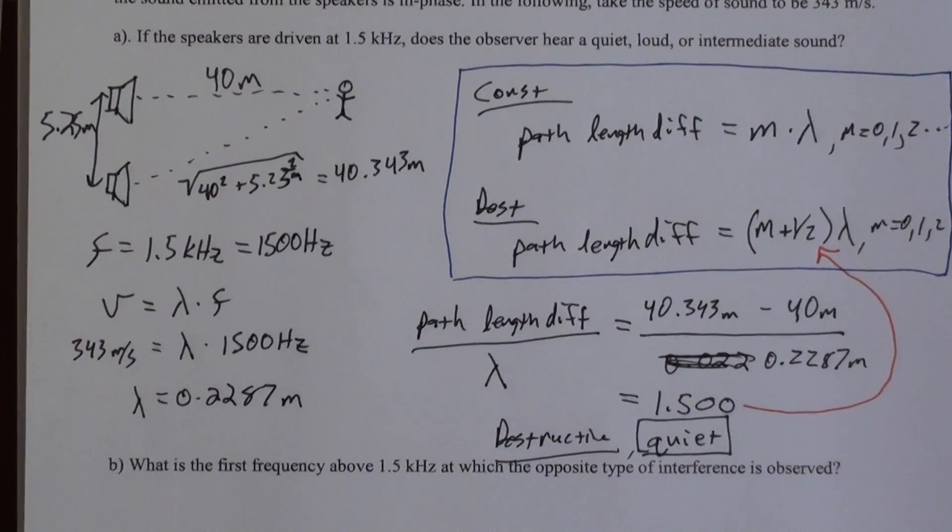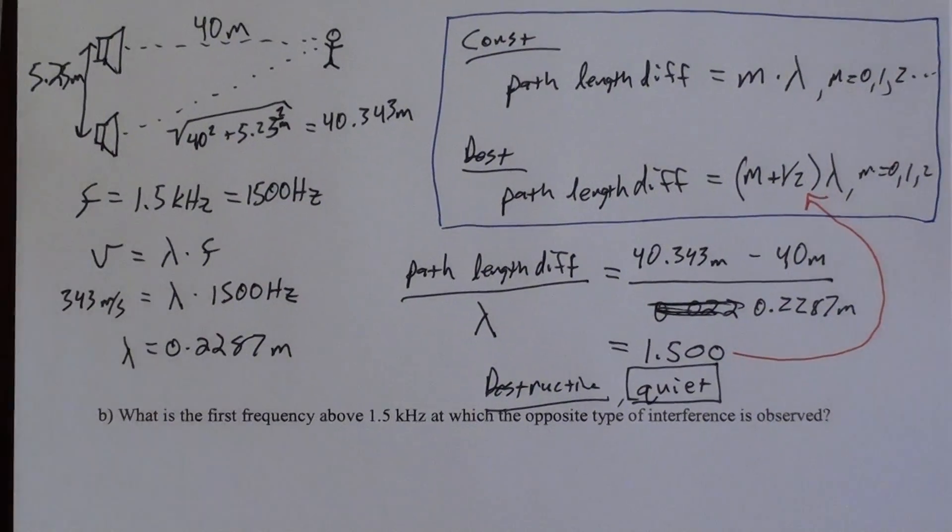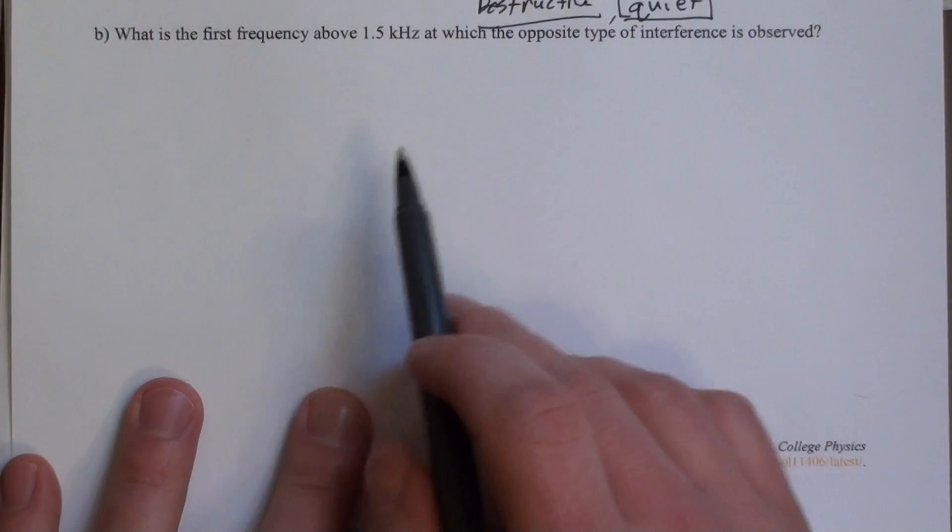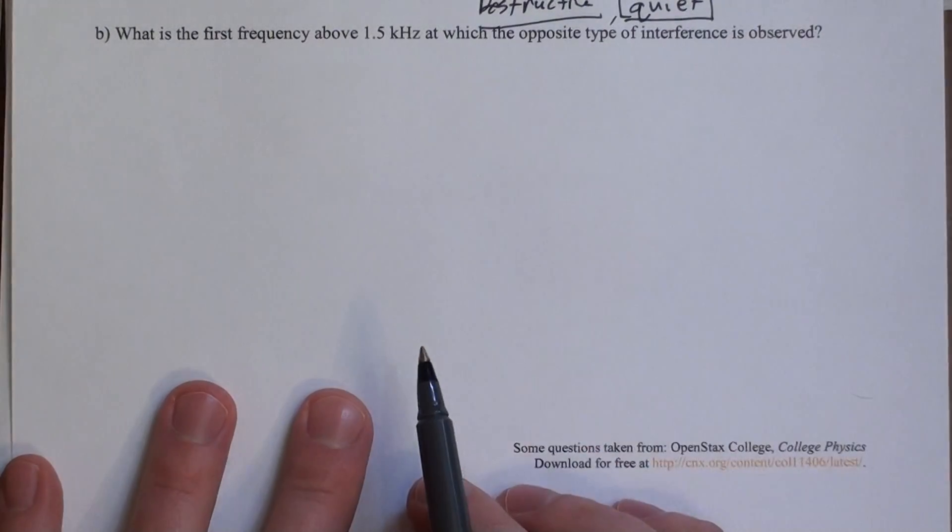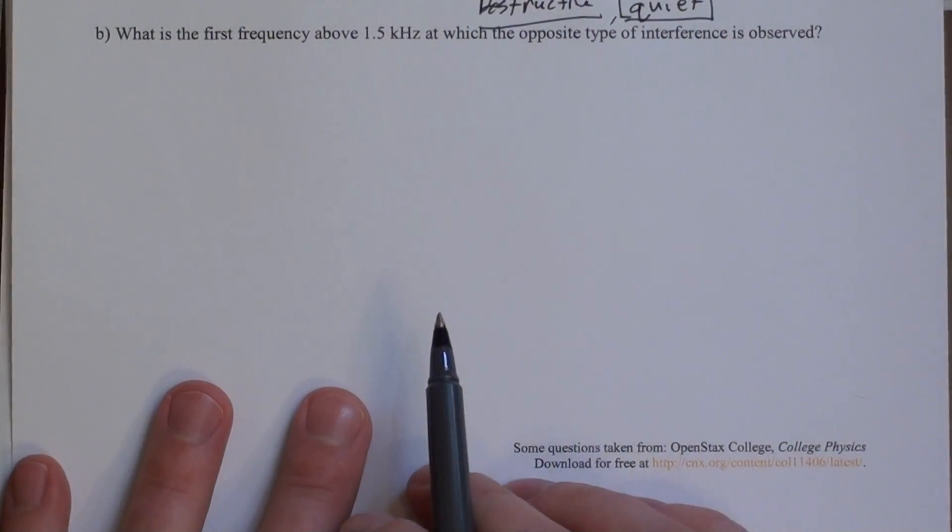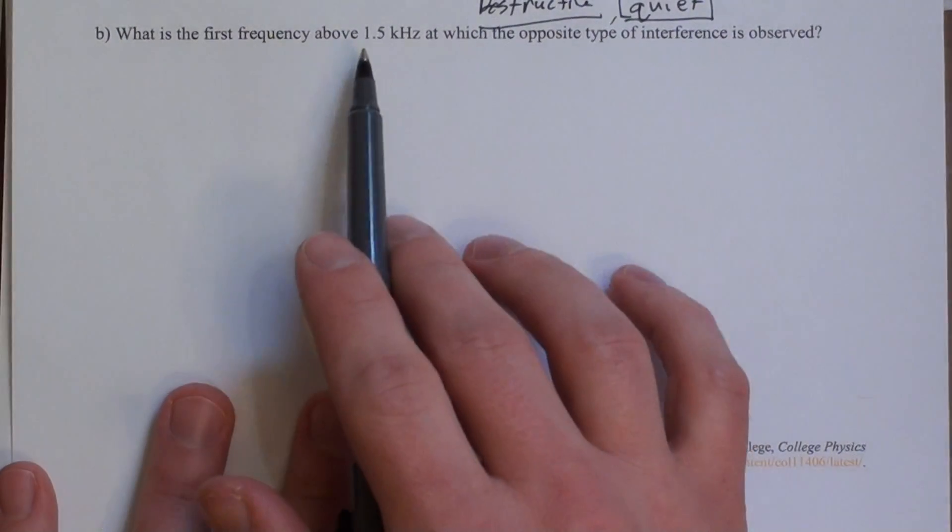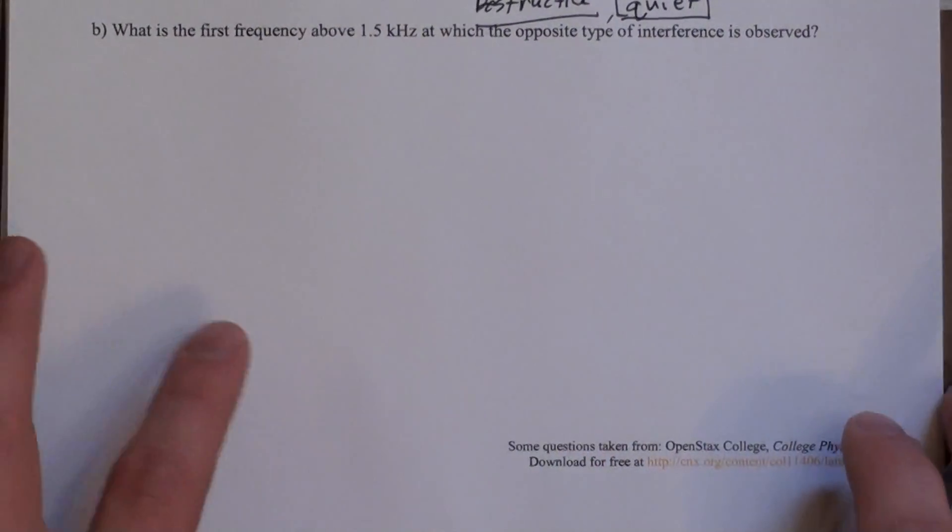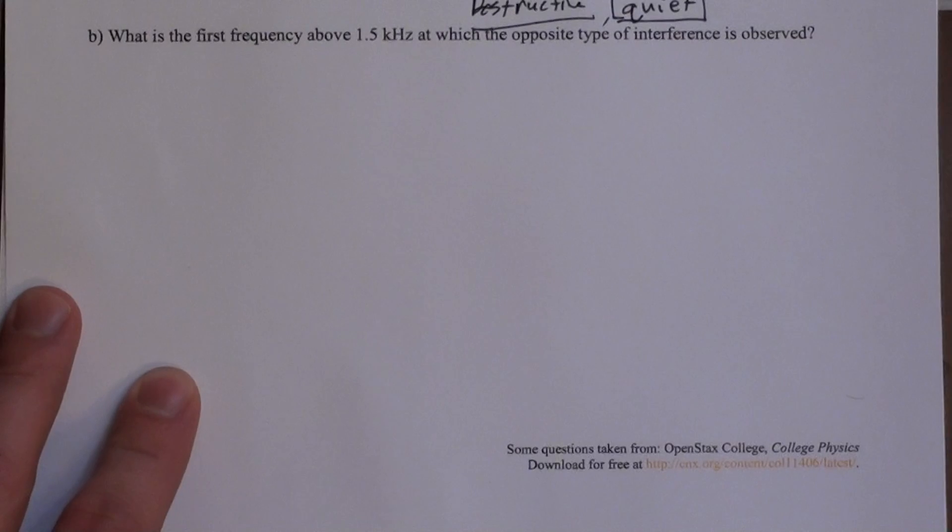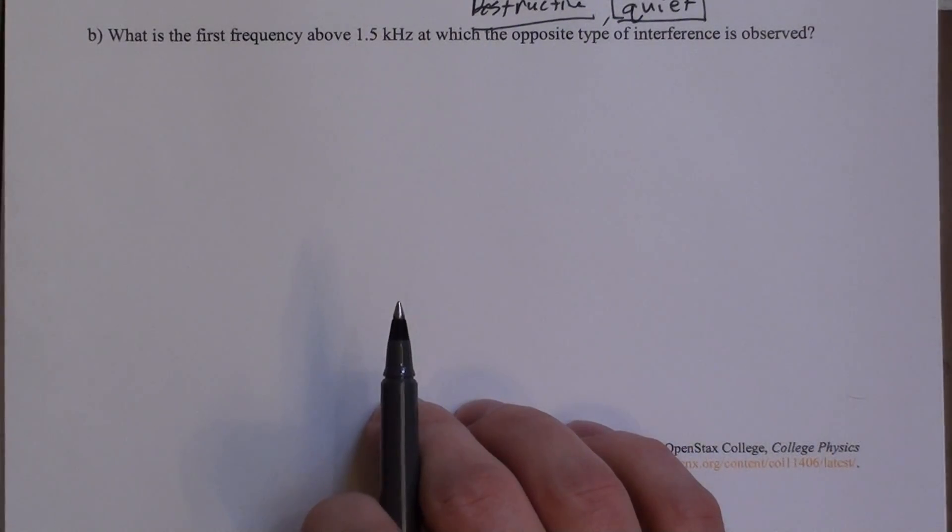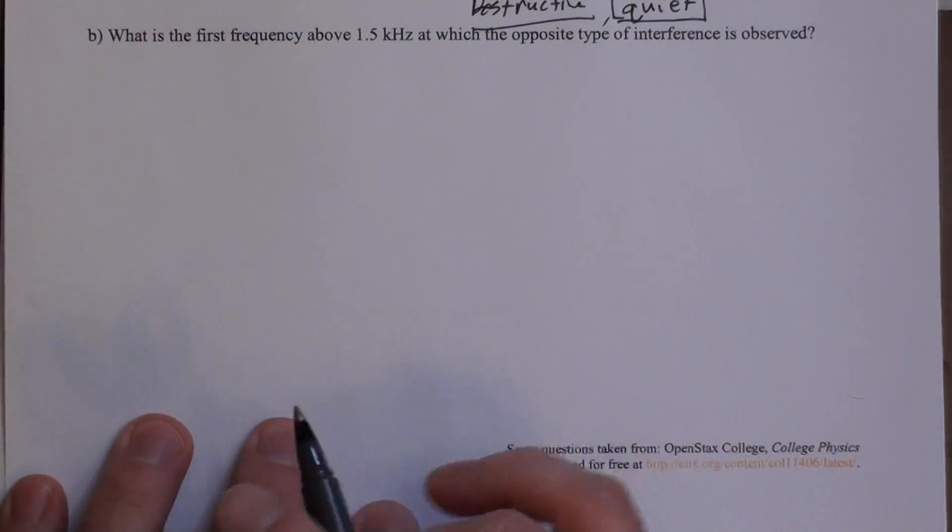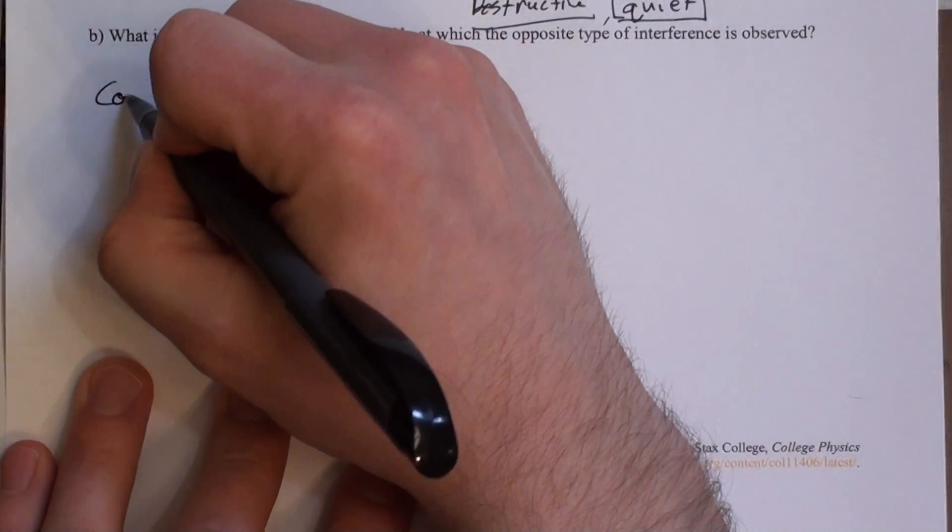So the second part of this question says, what is the first frequency above 1.5 kilohertz at which the opposite type of interference is observed? So the frequency, the first one above 1.5 kilohertz. So we're taking these speakers, we're driving them at a higher frequency, and we want to see when we get constructive interference in this case.